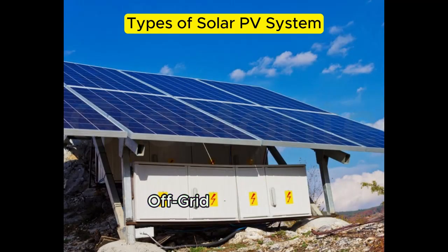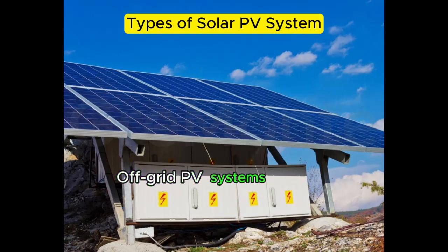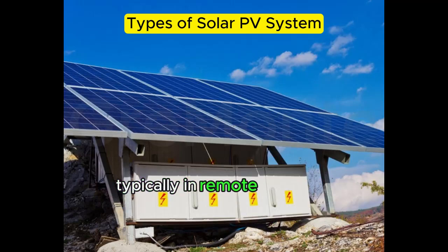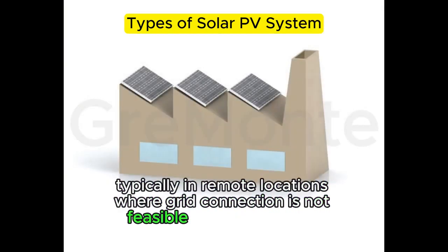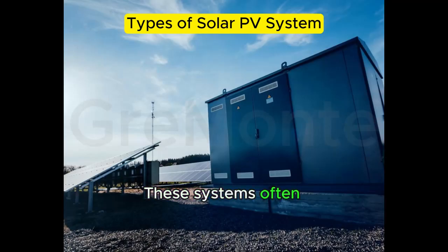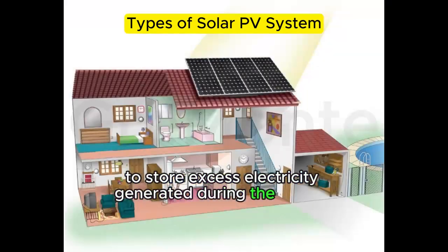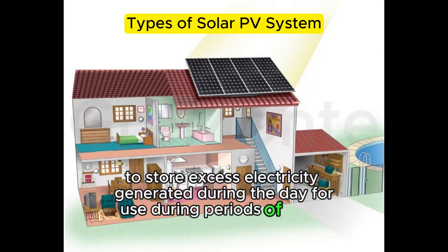Off-grid PV system. Off-grid PV systems are not connected to the utility grid and are designed to operate independently, typically in remote locations where grid connection is not feasible or cost-effective. These systems often incorporate battery storage to store excess electricity generated during the day for use during periods of low or no sunlight.